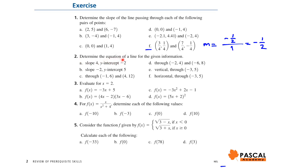Question 2: Determine the equation of a line for given information. Let's do parts A, C, E and F. Part A: slope is 4, y-intercept is negative 2. Substitute the given slope and y-intercept into y = mx + b. You have y = 4x minus 2.